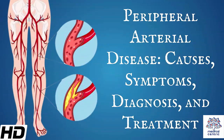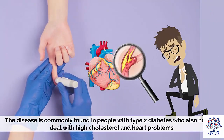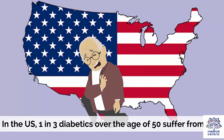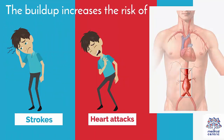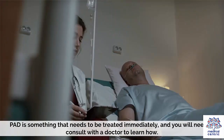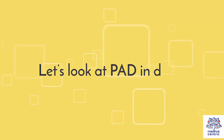Today's topic is Peripheral Arterial Disease – Causes, Symptoms, Diagnosis and Treatment. Peripheral arterial disease, or PAD, is a medical condition in which a buildup along the walls of blood vessels starts to make them narrow. The disease is commonly found in people with type 2 diabetes who also have to deal with high cholesterol and heart problems. In the US, one in three diabetics over the age of 50 suffers from PAD. It is commonly diagnosed when it causes symptoms in the feet or the legs. The buildup increases the risk of strokes, heart attacks and aneurysms, making it something you should take quite seriously. PAD is something that needs to be treated immediately and you will need to consult with a doctor to learn how.